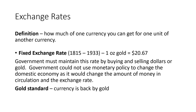Over time, the types of exchange rates we have used have changed. The first type of exchange rate we had was based on something called the gold standard. The gold standard meant that your currency was backed by gold — those pieces of paper had value because there was gold in a vault someplace. Under the gold standard, our exchange rate was based on gold, and one ounce of gold equaled $20.67.